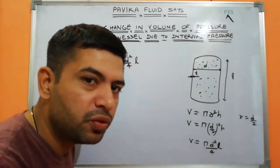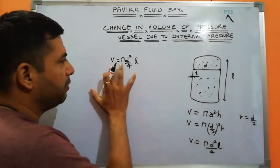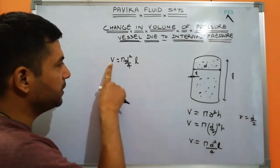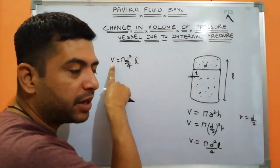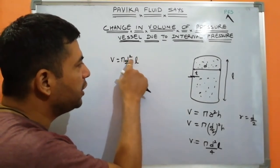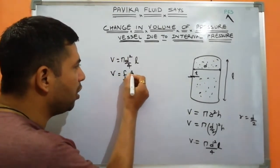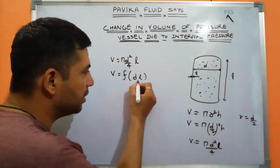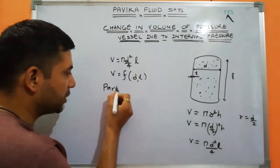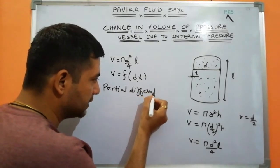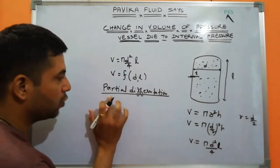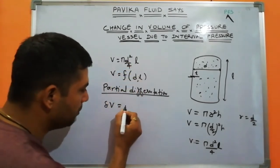To find the change in volume due to internal pressure, we'll use partial differentiation. V = πd²l/4, where π and 4 are constants. So V is a function of two parameters: d and l. Applying partial differentiation gives: δV = (π/4)[2d·δd·l + d²·δl].